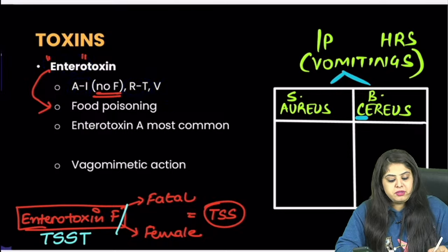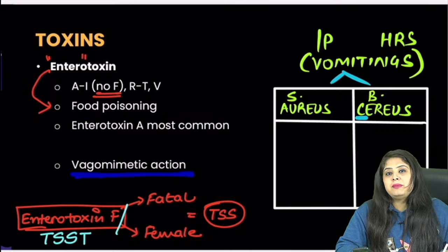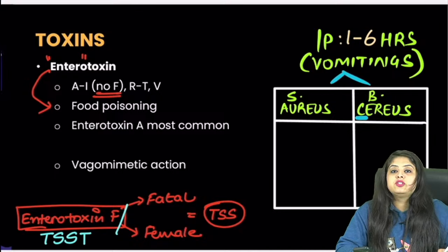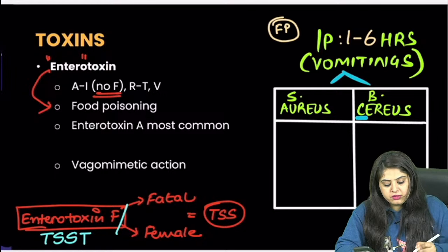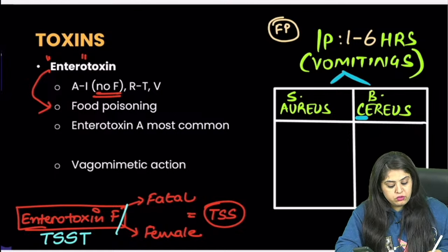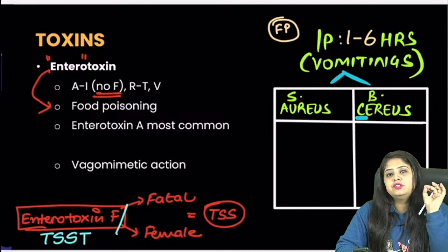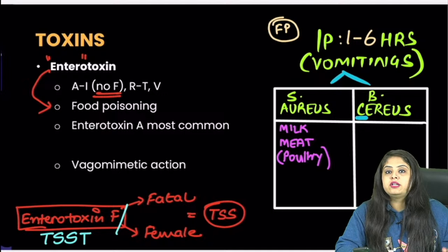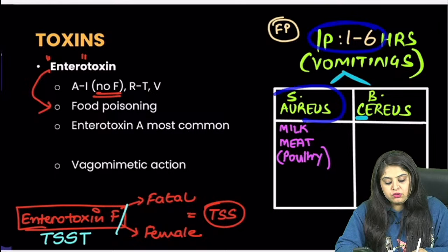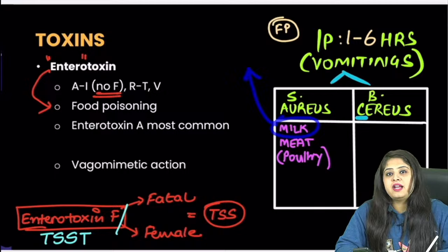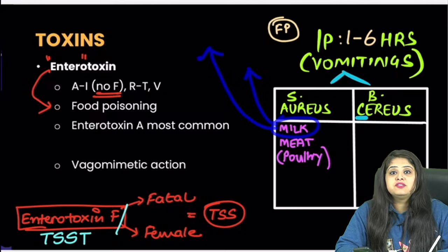Any enterotoxin from A to I (excluding F) causes food poisoning with a vagomimetic action — vomiting — and a very classical incubation period of 1 to 6 hours. When you get food poisoning with 1 to 6 hour incubation, think of either Staphylococcus aureus or Bacillus cereus. For Staph aureus: associated with milk, meat, poultry, or their derivatives like mayonnaise, cream.